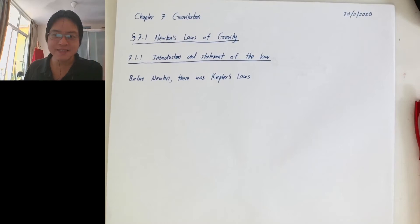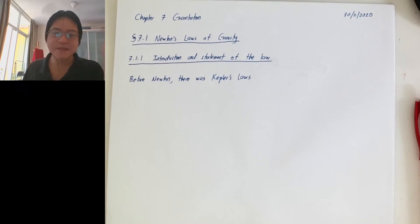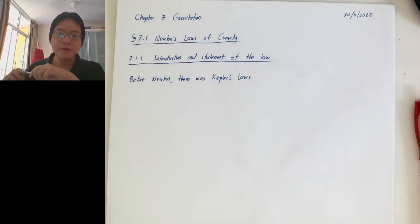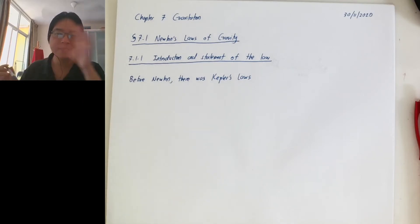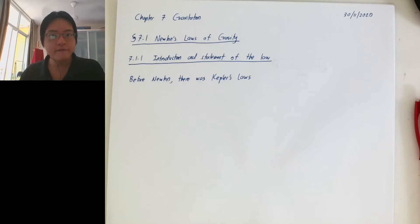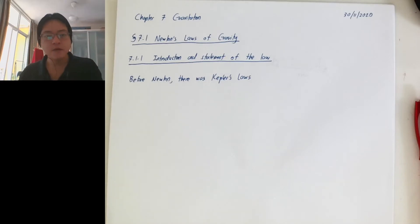This is the lesson after the midterm, so we will try to go a bit relaxed and a bit more slowly. We are kind of within schedule, so that's fine. We are going to talk about chapter 7 and Newton's Law of Gravity.